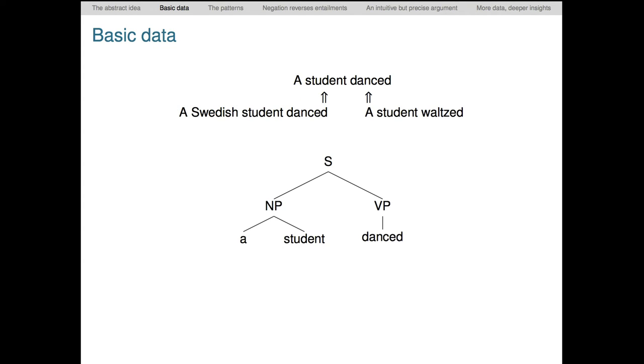Now, why are we asking about two sentences, whereas for Sandy danced, we asked about only one variant? To see why, we need to take a brief look at the syntactic structure of sentences with quantificational determiners like a. Here's a very simple syntactic structure for the basic case, a student danced. What this tree says is that a combines with student to form a unit or constituent, that's the subject of the sentence, a noun phrase, or NP. The subject then combines with the verb phrase, or VP, to create a sentence. This is what the syntacticians tell us about the basic structure of the sentence.